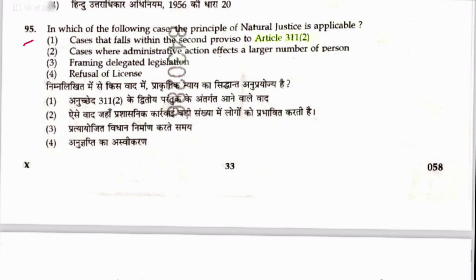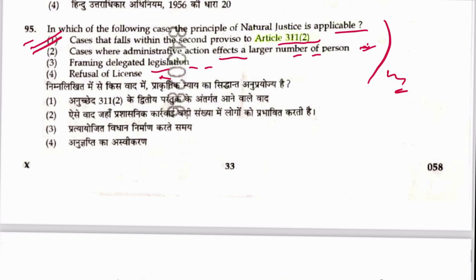Question 95: In which of the following cases is the principle of natural justice applicable? Cases falling within the second proviso to Article 311(2) — correct. Where administrative action affects a larger number of persons — not necessarily, even a single person can attract natural justice principles, so that is wrong. Framing delegated legislation and refusal of license are also considered. Answer is 1, though this is a somewhat controversial question.